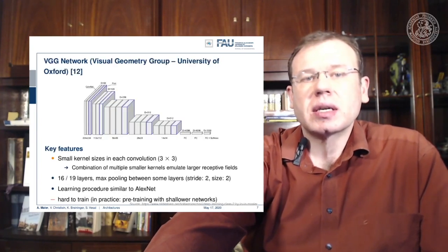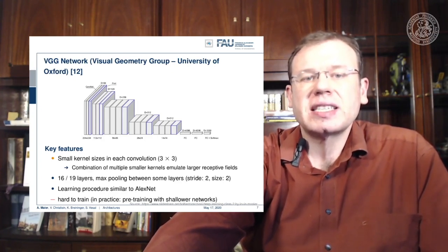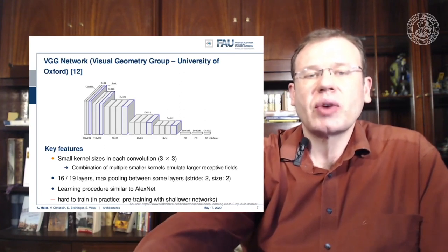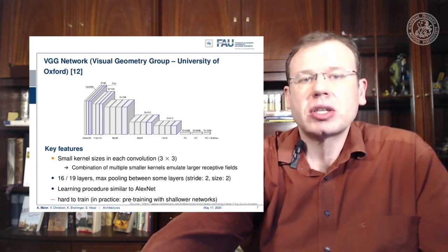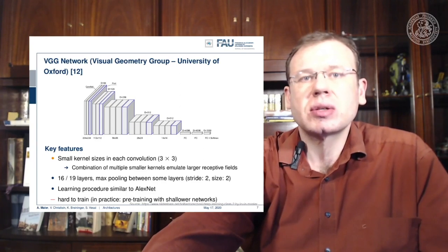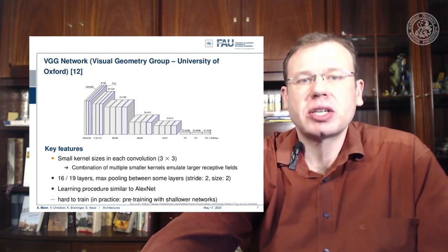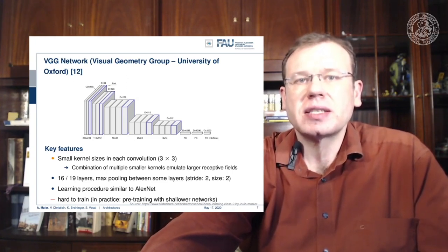Another very important architecture is the VGG network from the Visual Geometry Group at the University of Oxford. They introduced very small kernel sizes in each convolution. The network is widely used because pre-trained models are available for download. The key feature is that they reduce the spatial dimension while increasing the channel dimension step by step — a gradual transformation from the spatial domain into a classifier-relevant interpretation domain.